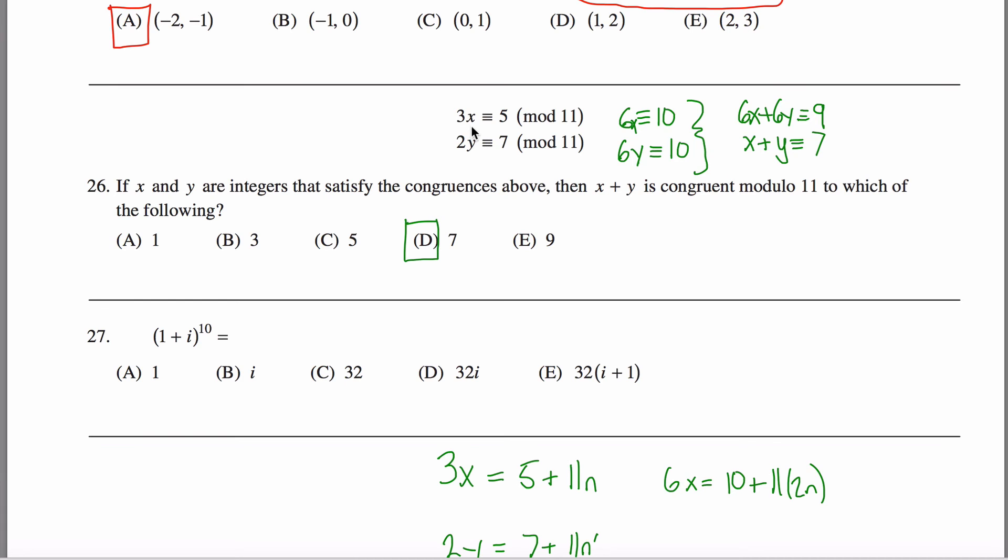Another way you could get there is instead of getting these both to have the same coefficient, I could just get x to have a coefficient of 1. And the way I could get there, I want to end up with a number that's 1 larger than 11. So maybe 12 if I multiply by 4.